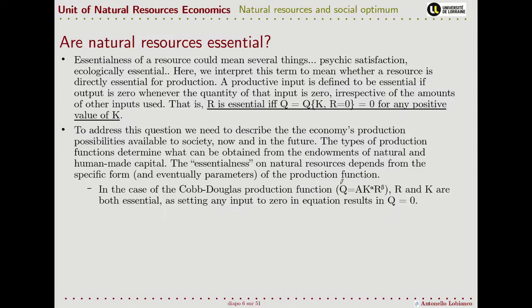If we take the Cobb-Douglas production function, a very widely used form written as q = A · k^α · r^β, we can see that both r and k are essential, because if we set either of them to zero — whatever the other one is — we end up with q equal to zero.